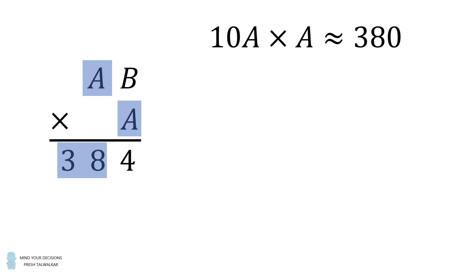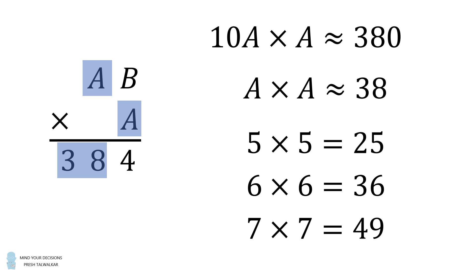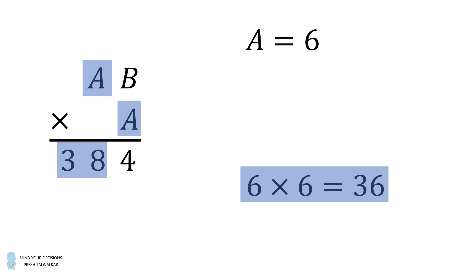That means 10A multiplied by A is approximately equal to 380. In other words, A multiplied by A is approximately equal to 38. So we can consider perfect squares. 5 multiplied by 5 is equal to 25. That's too small. 6 multiplied by 6 is equal to 36. And 7 multiplied by 7 is equal to 49. That's too large. The only possibility that works is 6 multiplied by 6 is equal to 36. So we can conclude that A is equal to 6.